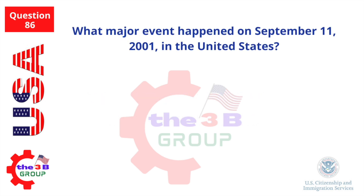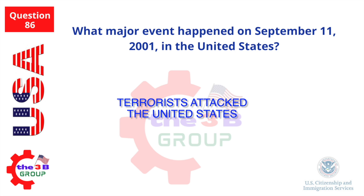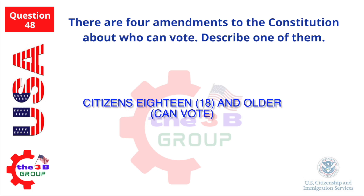What major event happened on September 11, 2001 in the United States? Terrorists attacked the United States. There are four amendments to the Constitution about who can vote — describe one of them. Citizens 18 and older can vote.